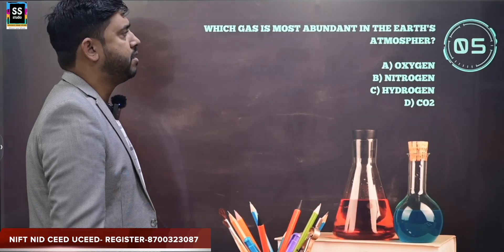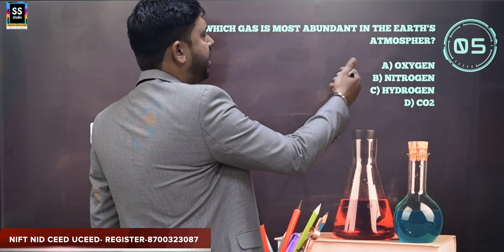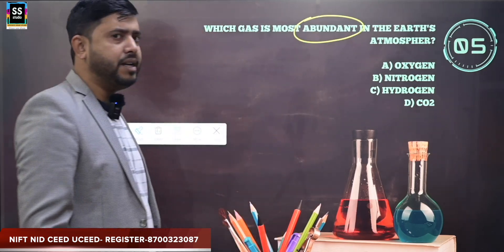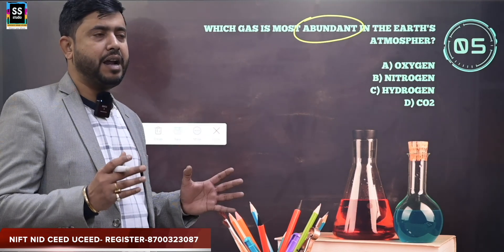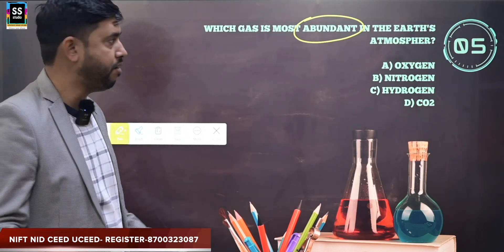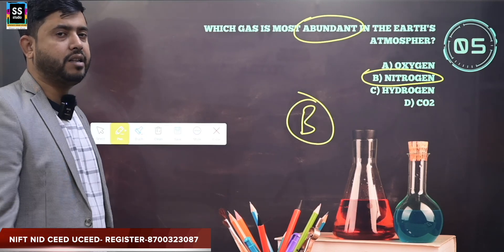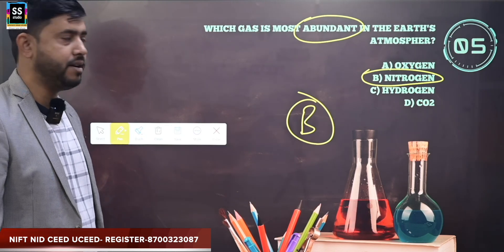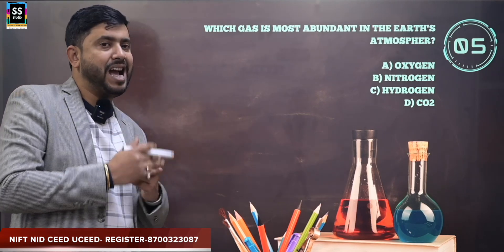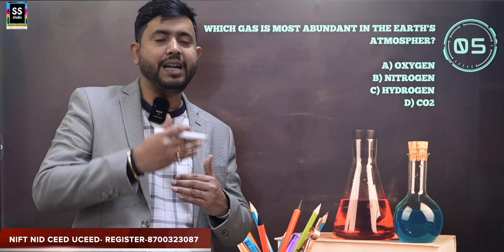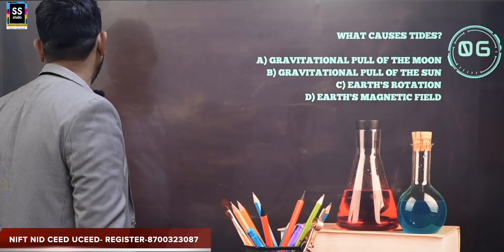The next question is: which gas is most abundant in Earth's atmosphere? Abundant means more than sufficient. The correct answer is nitrogen. Nitrogen is available in Earth's atmosphere in maximum quantity and is known as the most abundant gas. You should go through the different gases and how they relate to Earth's atmosphere.